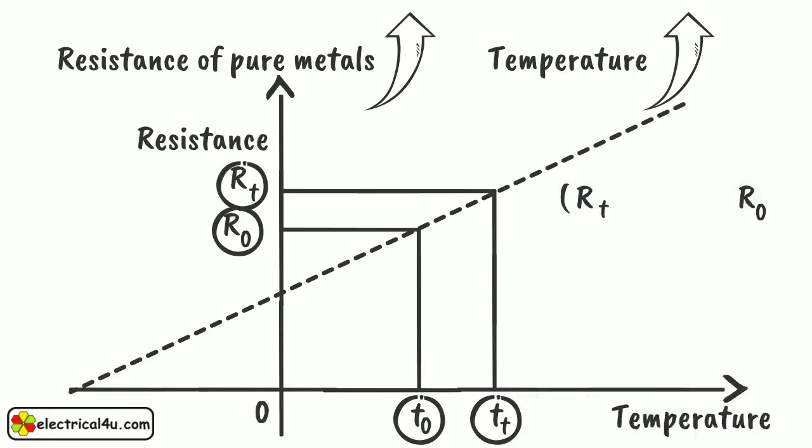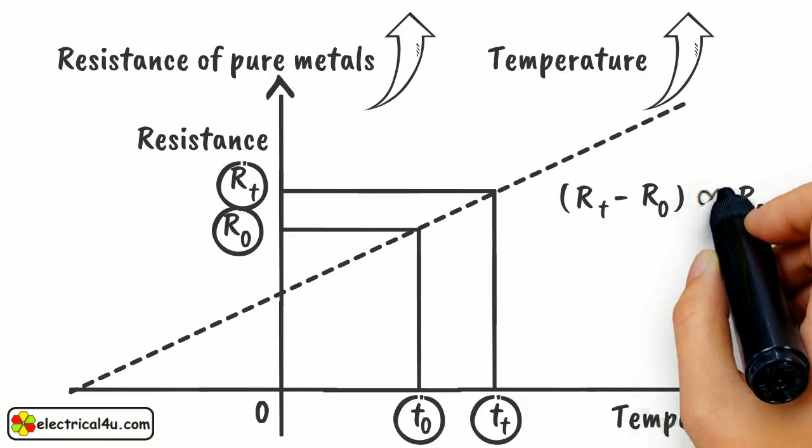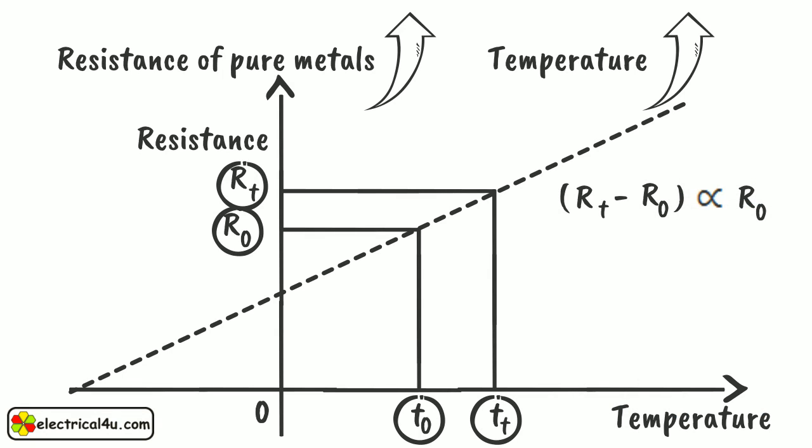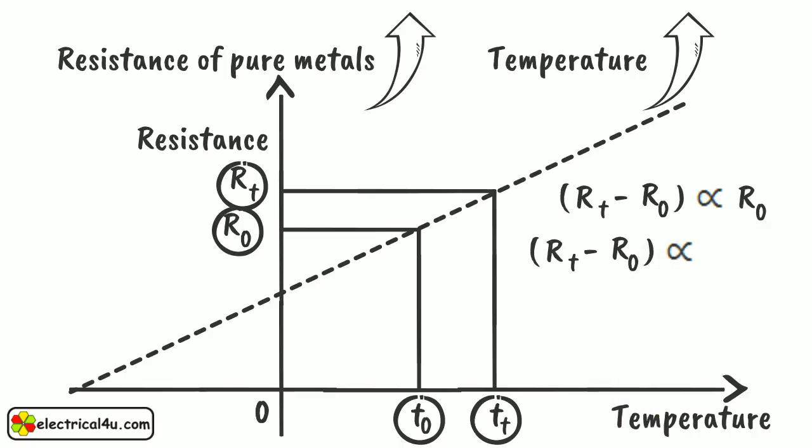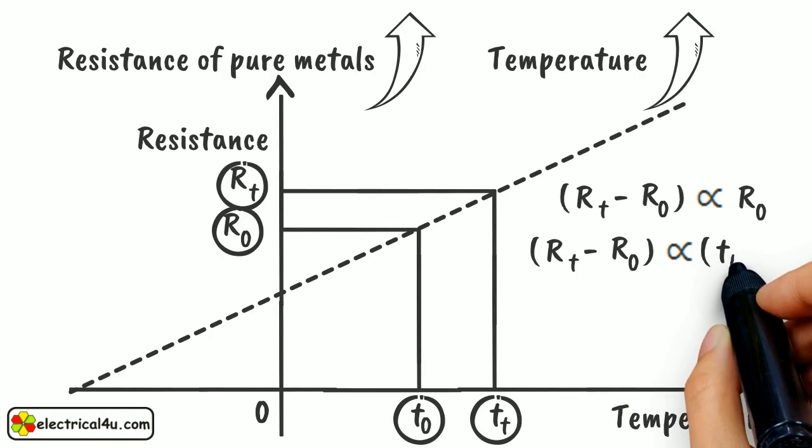RT minus R0 is proportional to R0. It is also needless to say that change of resistance depends on how much the temperature of the conductor has been changed. If variation of temperature is more, the change in resistance is more and vice versa. RT minus R0 is also directly proportional to the temperature rise, T suffix T minus T suffix 0.